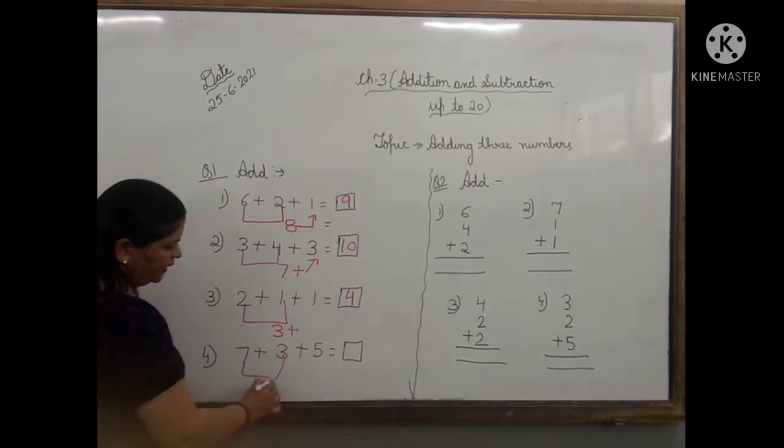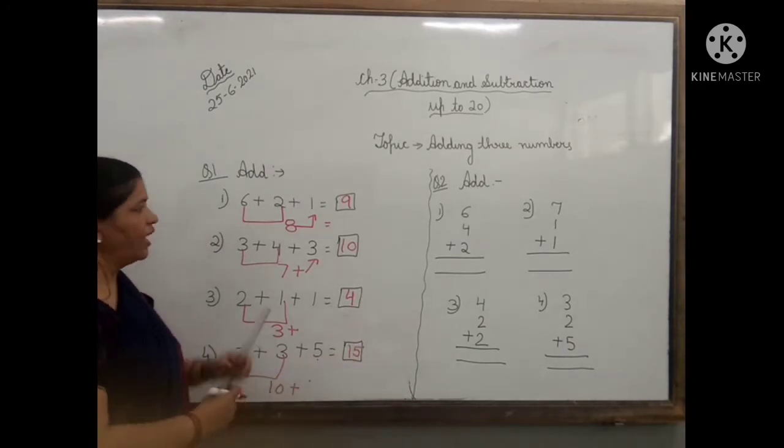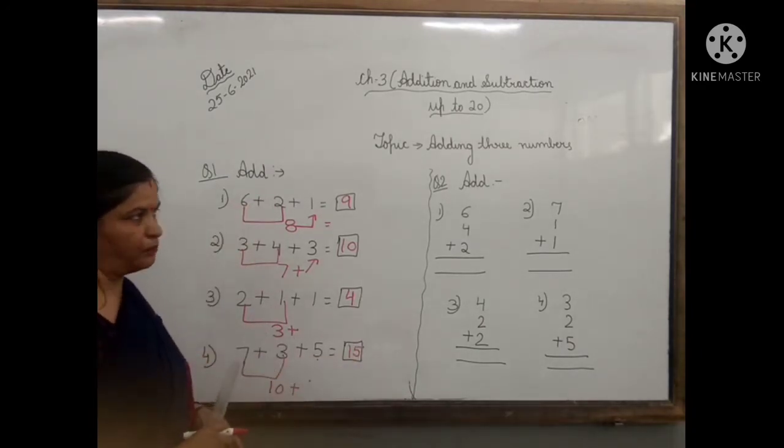7 plus 3, 10. And after that you have to add 5. So the answer will be 15. Like this, you have to add 3 numbers.